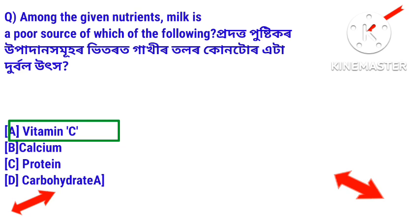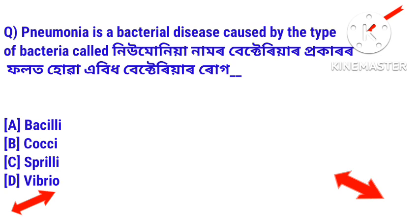Question 2: Pneumonia is a bacterial disease caused by which type of bacteria? Pneumonia is a bacterial disease.